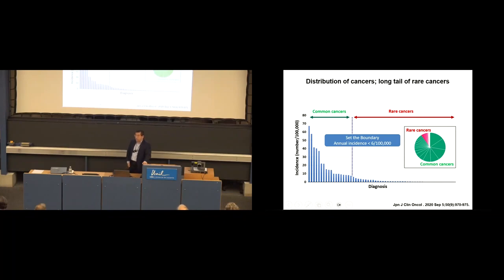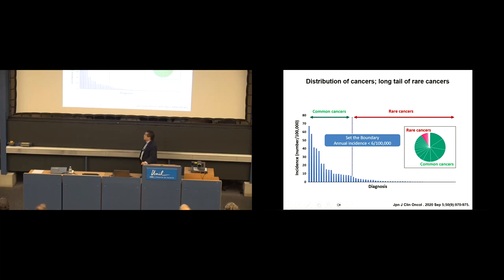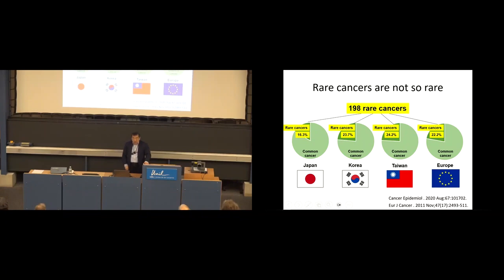This slide demonstrates the distribution of malignancies. The x-axis shows the malignancies and the y-axis shows their incidence. There are a small number of malignancies with many patients, and many, many malignancies with a small number of patients. Although the number of individual rare cancers is very small, because we have so many different rare cancers, rare cancers are not so rare. According to statistical studies, in Asian and European countries, approximately 20% of cancer patients suffer from rare cancers.